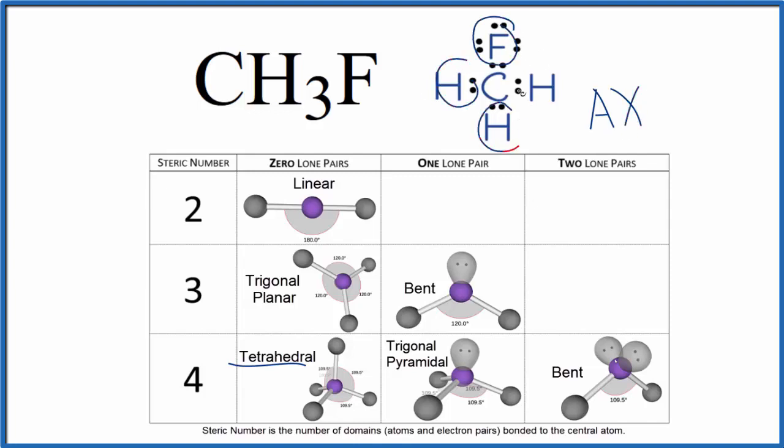We have one, two, three, four. So that's going to be four. E, that's the number of lone pairs on the central carbon. There aren't any. They're all involved in bonding. So if you look this up, you're going to find out it's tetrahedral, just like we found using the steric number here.